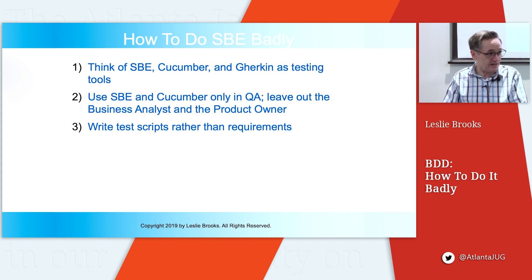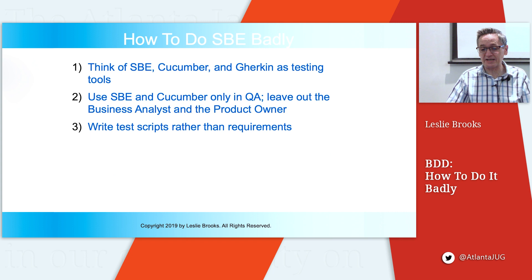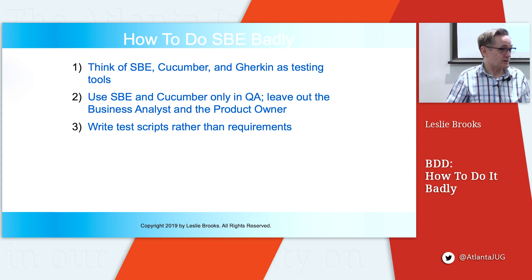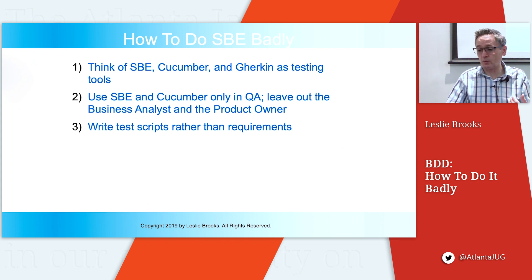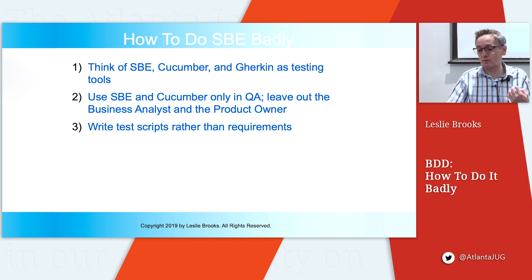Think of BDD, Cucumber, and Gherkin as testing tools. Use BDD or specification by example and Cucumber only in QA — leave out the business analyst and the product owner. Write test scripts rather than requirements. If you avoid these errors, you are well on your way to dramatically improving the entire requirements, development, test, deliver process.